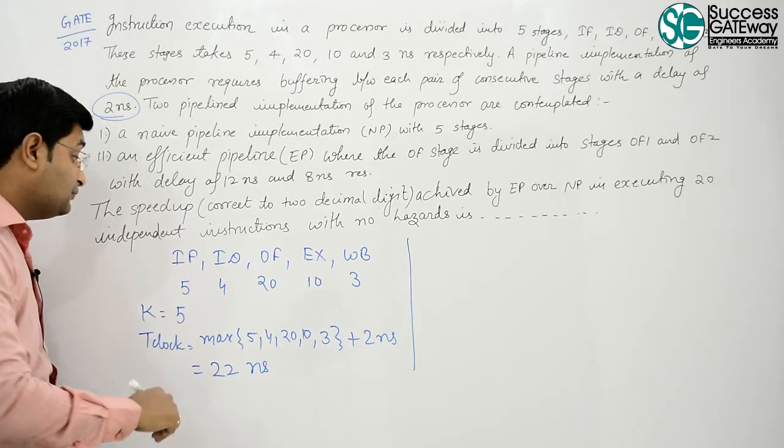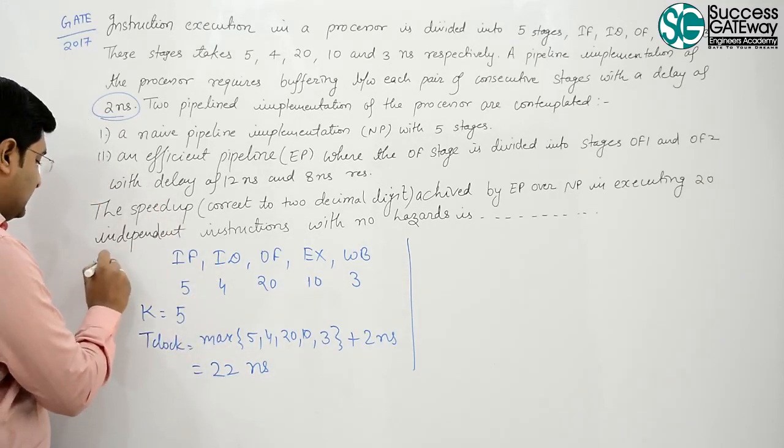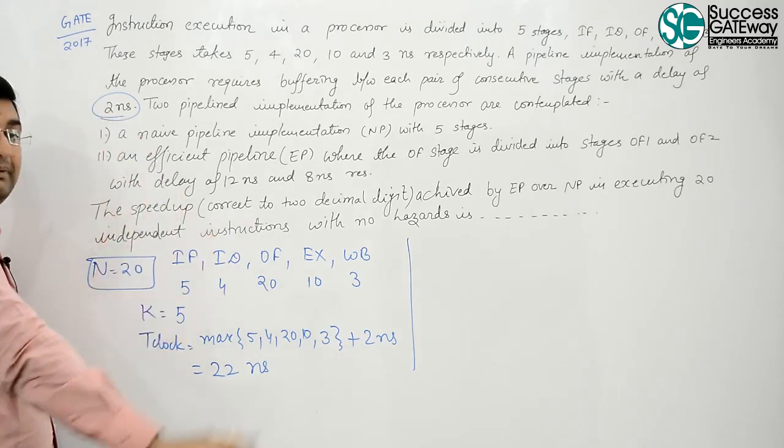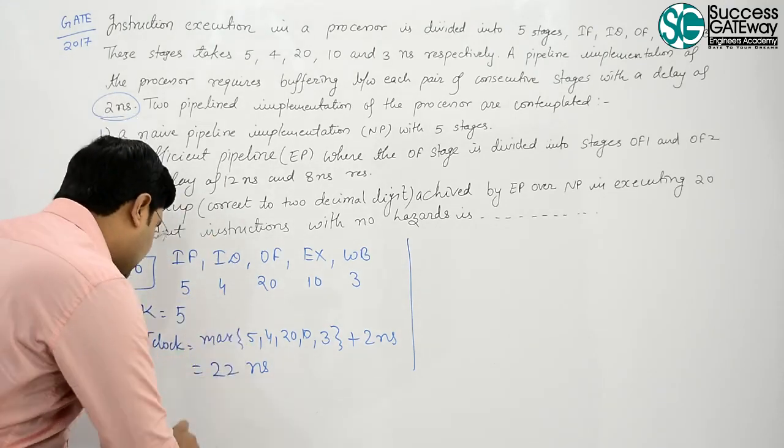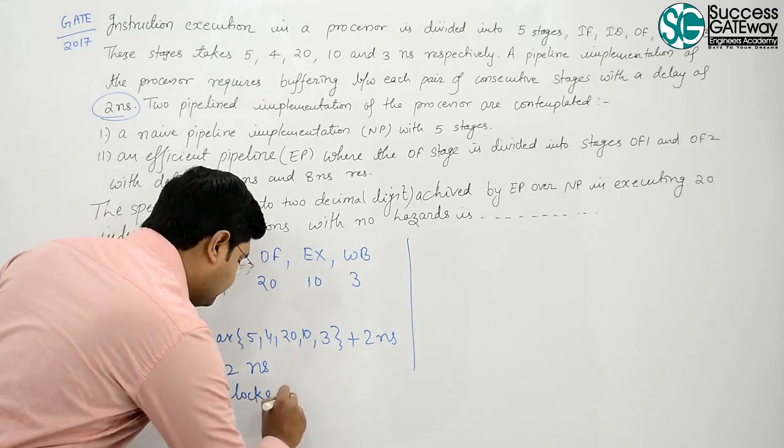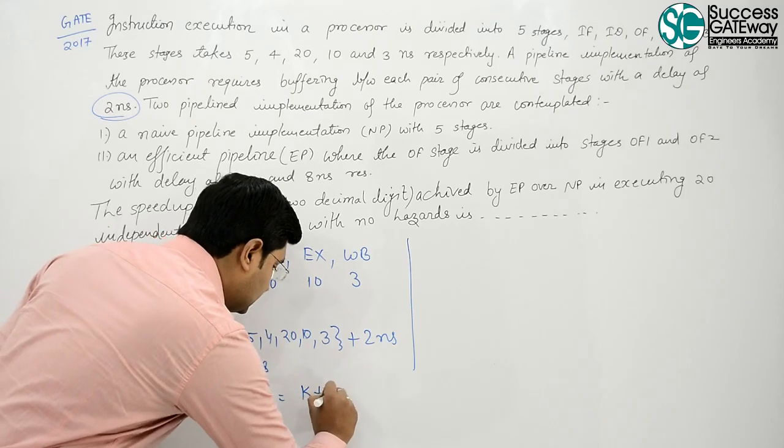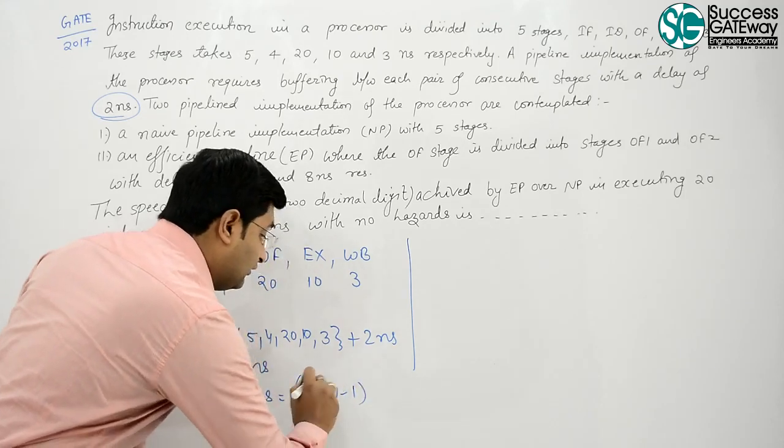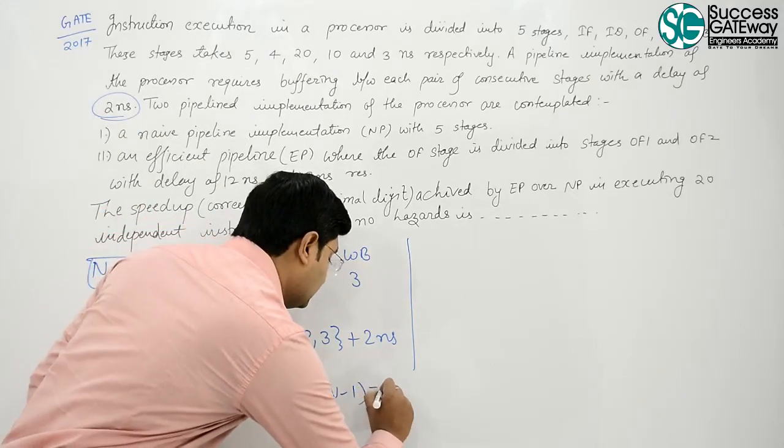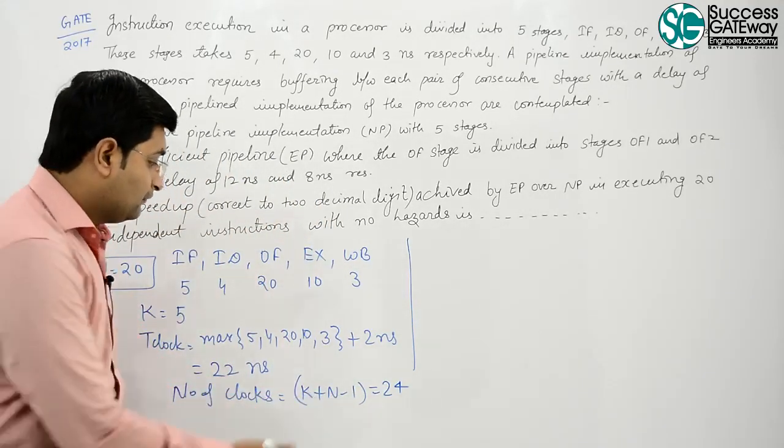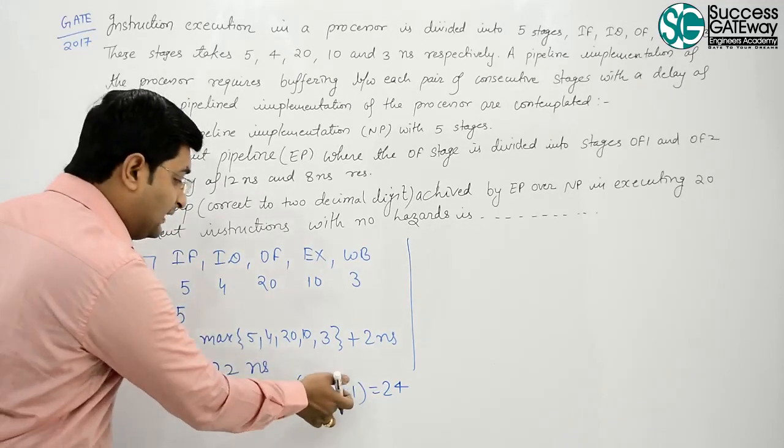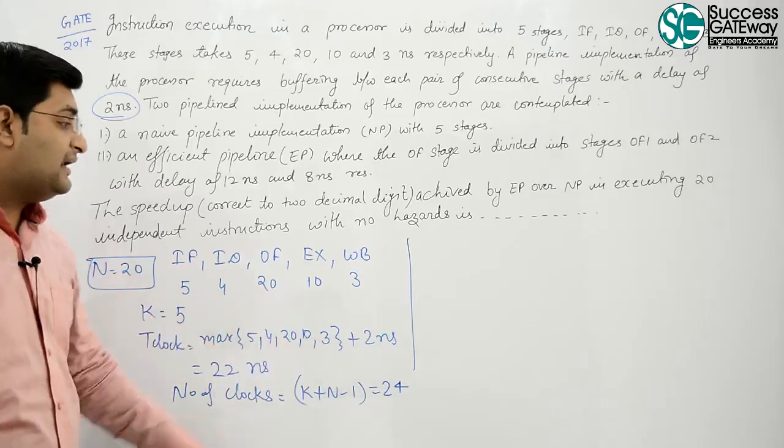How many clocks for 20 instructions? N is 20 for both implementations. Number of clocks we need is K plus N minus 1. Always you will go for this only. That is 5 plus 20 minus 1, that is 24.